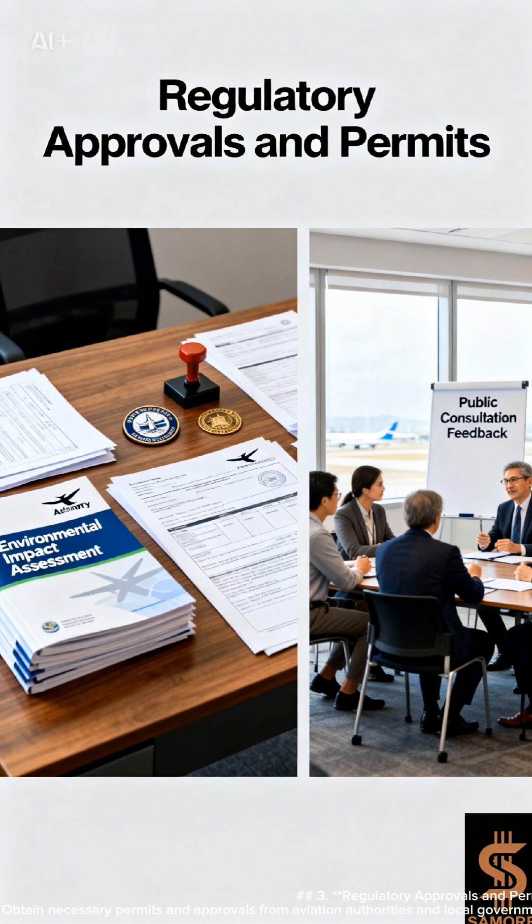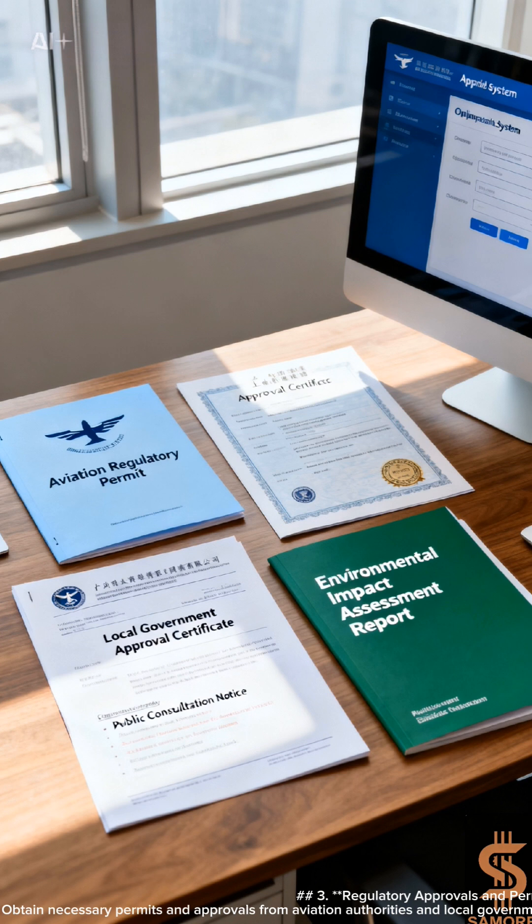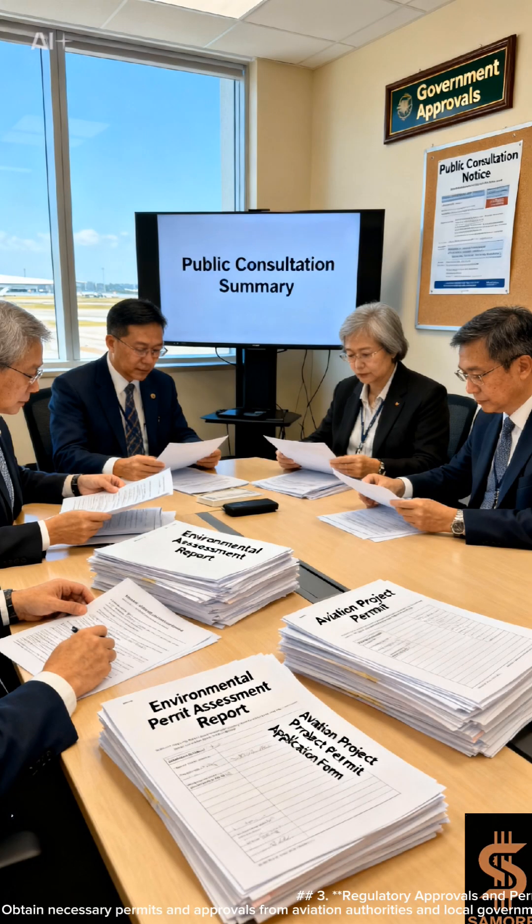3. Regulatory Approvals and Permits. Government Approvals: obtain necessary permits and approvals from aviation authorities and local government bodies. This may include environmental assessments and public consultations.